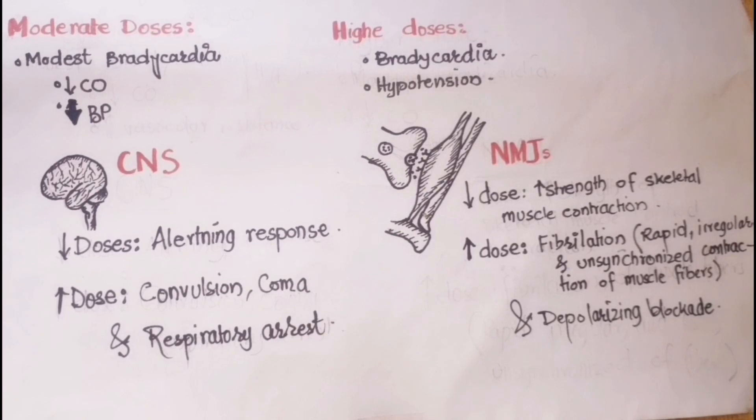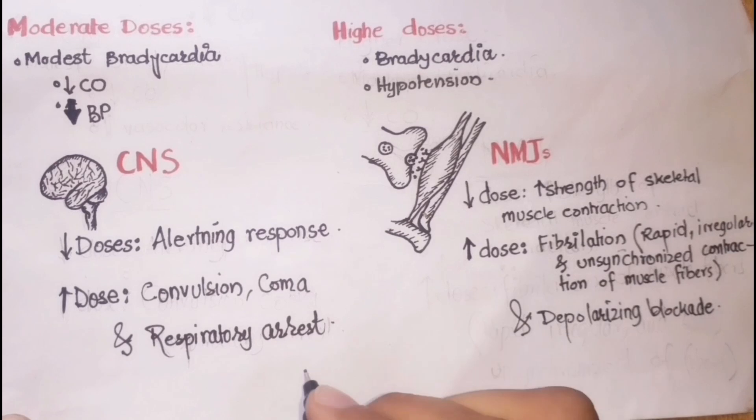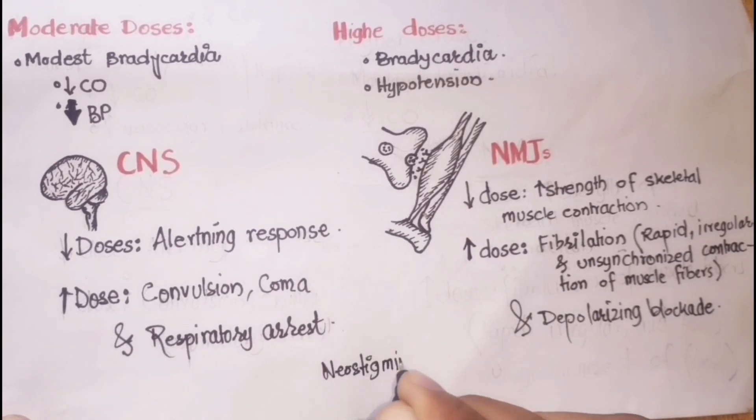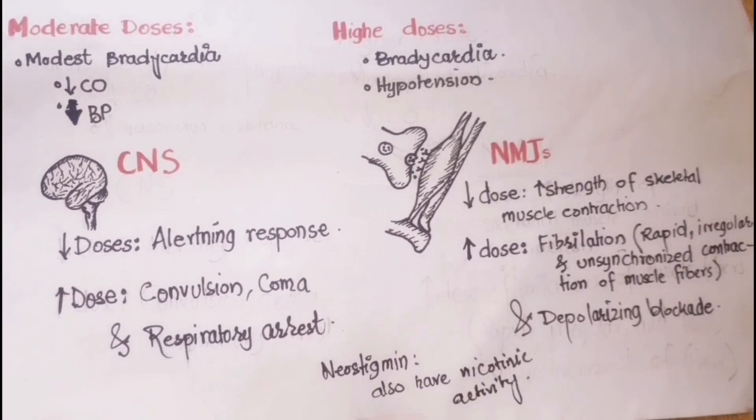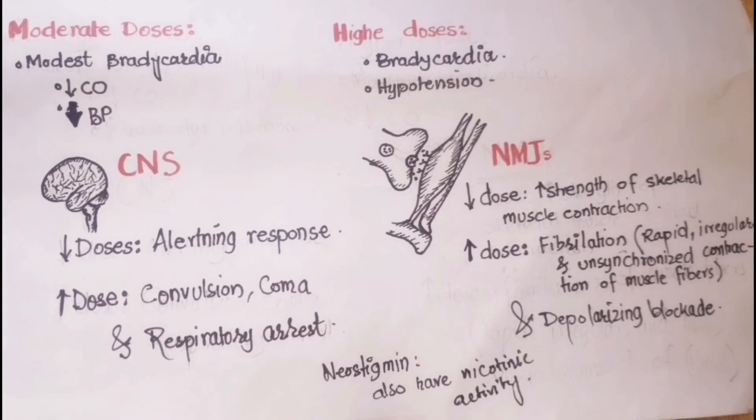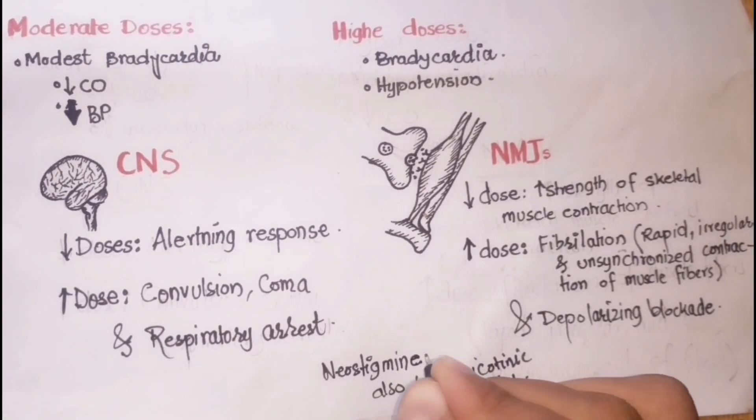Beside all these actions of indirect-acting drugs, neostigmine also has an additional agonistic activity on the nicotinic receptors of neuromuscular junctions, and that is why it is also chosen for the management of myasthenia gravis.